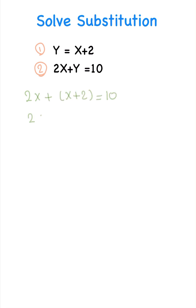We're going to have 2x plus x plus 2 equals 10. We're going to have 3x equals 8. Both sides divided by 3 is going to be x equals 8 over 3. We have our x.